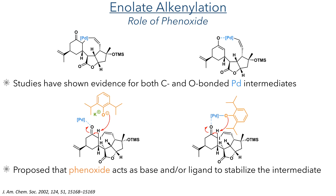It is worth noting that studies into enolate alkynylations have shown evidence for both carbon-bonded and oxygen-bonded palladium intermediates. In my scheme, I have shown the carbon-bonded intermediate, as I think this is more likely in this system due to the more favourable ring size. Buchwald's group has looked at the effect of phenoxide in this reaction, and their studies assume an oxygen-coordinated palladium complex. While they could not conclusively prove the role that the phenoxide is playing, they suggest several hypotheses. The simplest is that palladium first coordinates to the carbonyl and the phenoxide serves as the base to generate the enolate. The pathway they think is most likely, however, is that the phenoxide acts as a ligand to stabilise an otherwise unstable palladium intermediate and allow the reaction to proceed. They support this by noting that increasing the steric bulk on the phenoxide decreases reactivity, indicating that it is close to the reacting centre during the reaction.